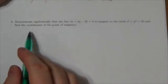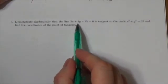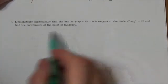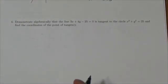Okay, question four. Demonstrate algebraically that the line 3x plus 4y minus 25 equals zero is tangent to the circle and find the coordinates of the point of tangency.